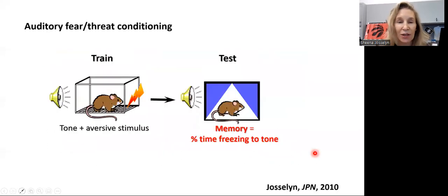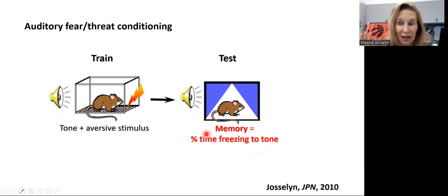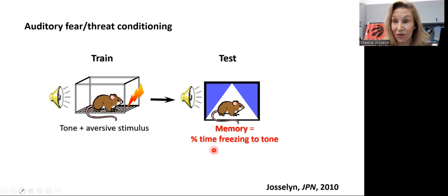To examine this, we're going to look at fear or threat conditioning. There are two varieties — auditory fear or threat conditioning, where we pair a neutral tone with an aversive stimulus such as a mild foot shock. We can then test the mouse anytime later. We just replay the tone and ask: do you remember the last time you heard this tone, you received this aversive foot shock? They show us good memory for this by freezing — showing a defensive response to the tone.